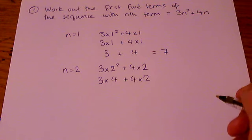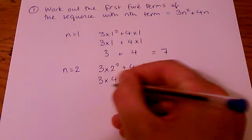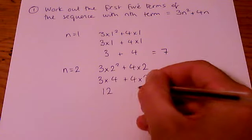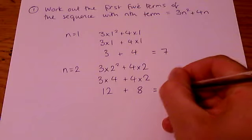2 squared is 2 times 2. It's 4. And then if we work out these multiplication bits first, we get 12 plus 8, which is 20.